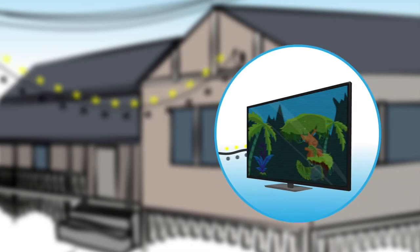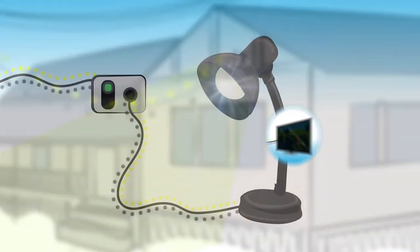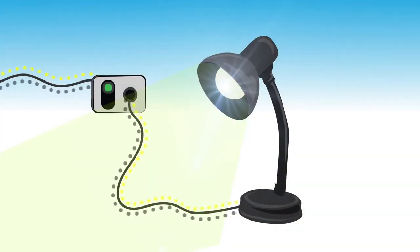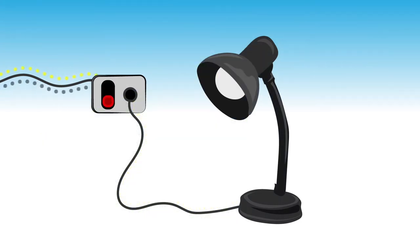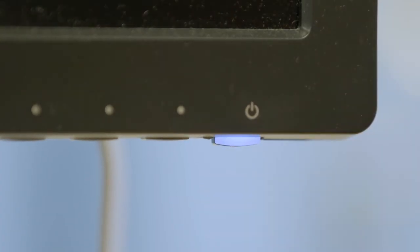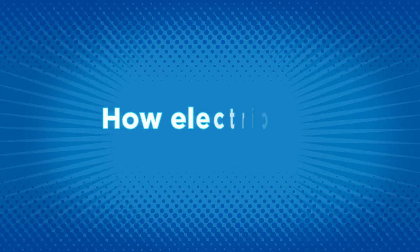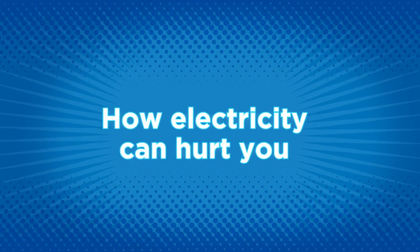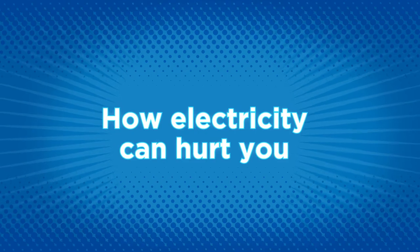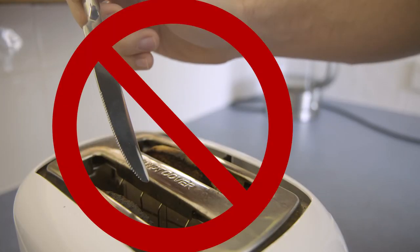There must be a continuous circuit for the electricity to travel through. For an electrical appliance to work, a switch is used to break a circuit so that you can turn electrical appliances and lights on and off.